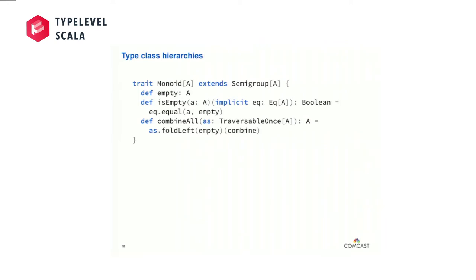In CATS and Scalaz 7, we define relationships between type classes with subtype polymorphism. So here we say a Monoid is a Semigroup where we've got this empty operation. There are other mechanisms — Alois Couchard has a project called Scato which people are looking at as the basis for Scalaz 8's type class layout. With CATS we actually experimented a little bit early on. I still think that subtype polymorphism for type class hierarchies strikes a nice balance between implicit resolution workarounds and performance. That's not to say it'll always be that way, but as of right now I think subtype polymorphism is good for this.